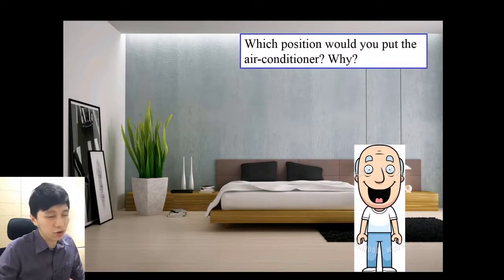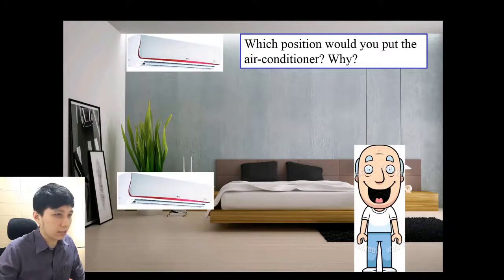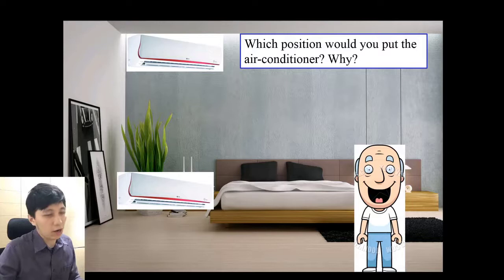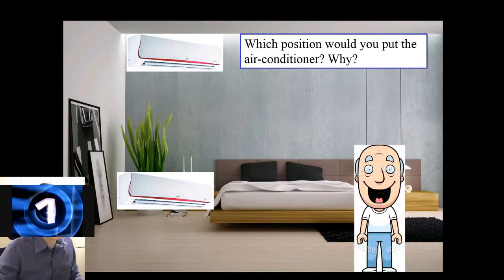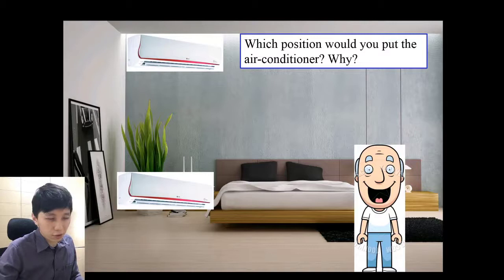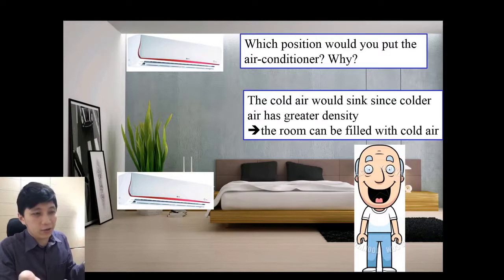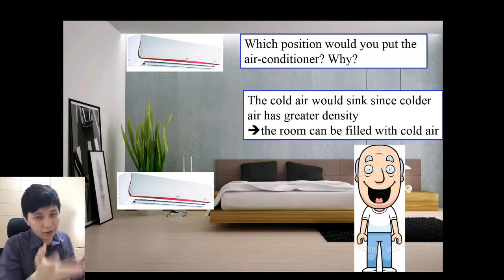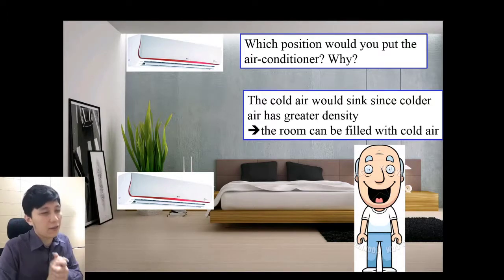Here's another example — your grandfather bought a new air conditioner. Would you suggest putting it at the top or at the bottom, and why? Assuming you want to treat him well, you should suggest putting the air conditioner at the top. Using the same idea of convection, the cold air sinks because it has greater density, so the whole room can be filled with cold air.